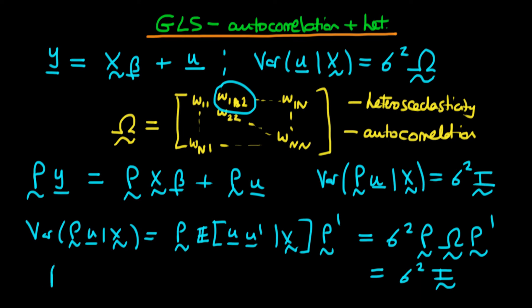But we've already solved this. We've already found that P in this circumstance has to be equal to, or can be equal to, omega to the power minus a half. So we can apply exactly the same transformation as we used before in the presence of autocorrelation.